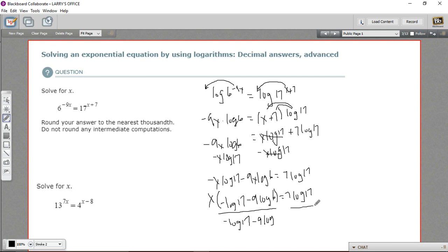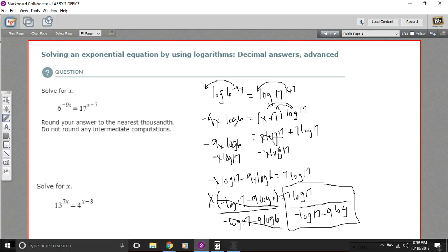And of course, we have to divide both sides by the same expression. So negative log of 17, minus 9 log 6. A lot of steps, but what we've done now is we've isolated x on the left side here, and we're left with just this expression. And you'll see, this is something we could simply type into a calculator and get a value for. It'll take a little work, but we can do it.